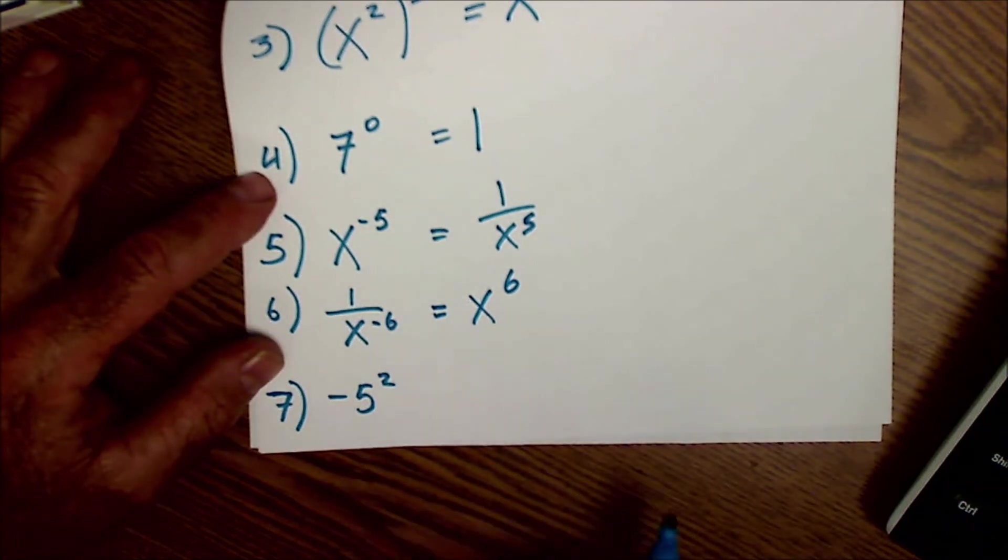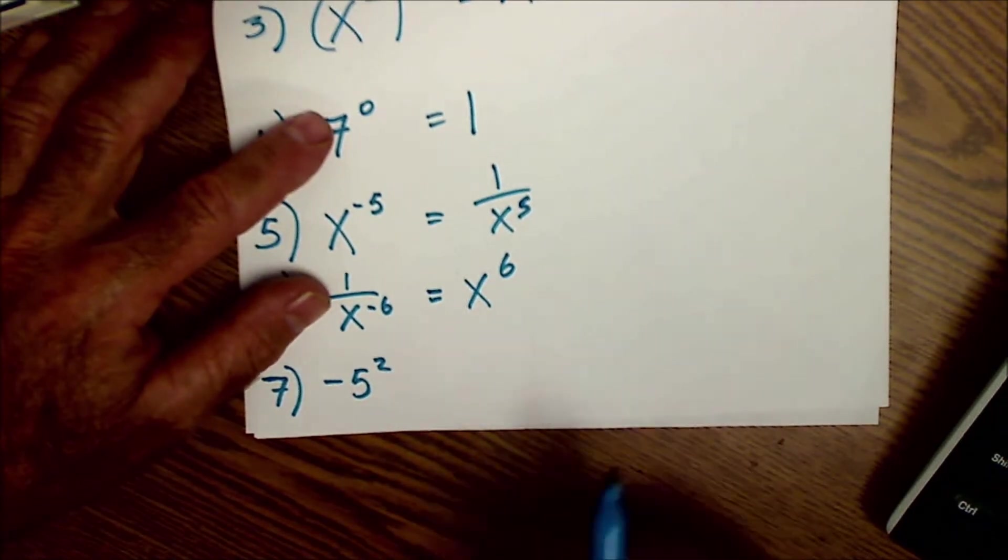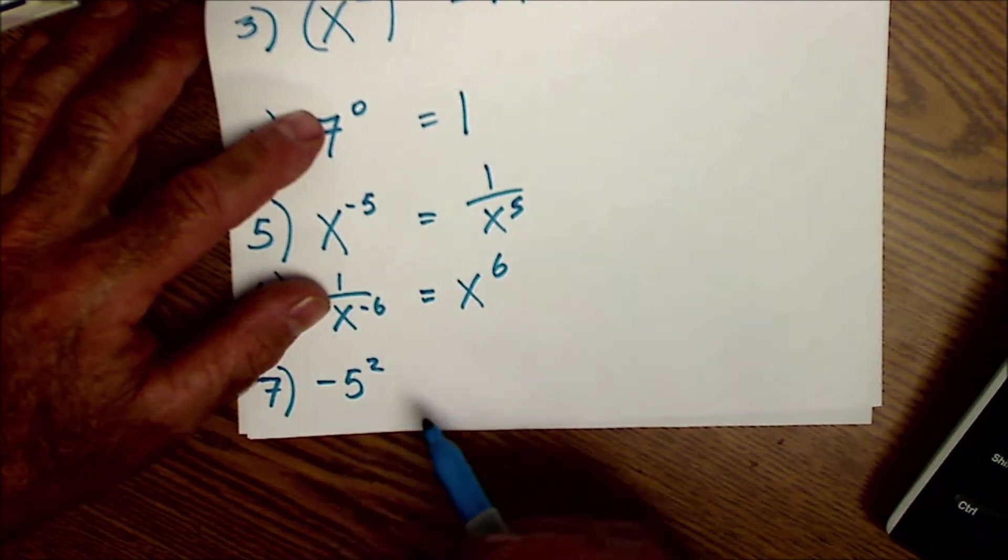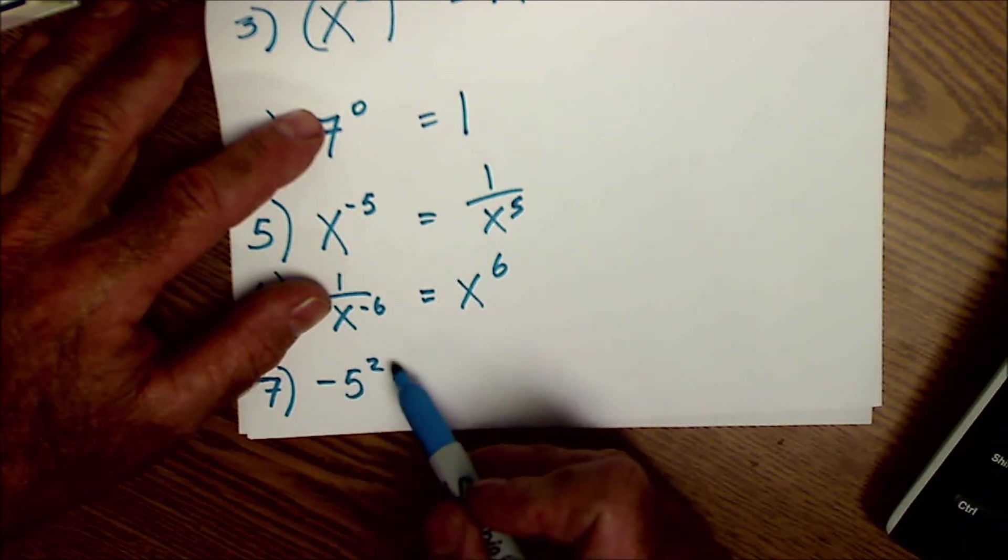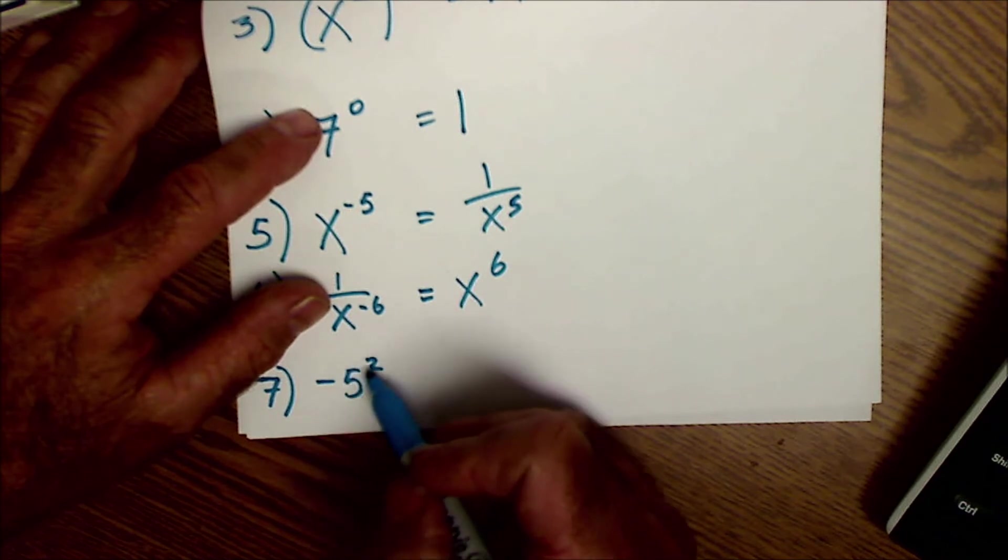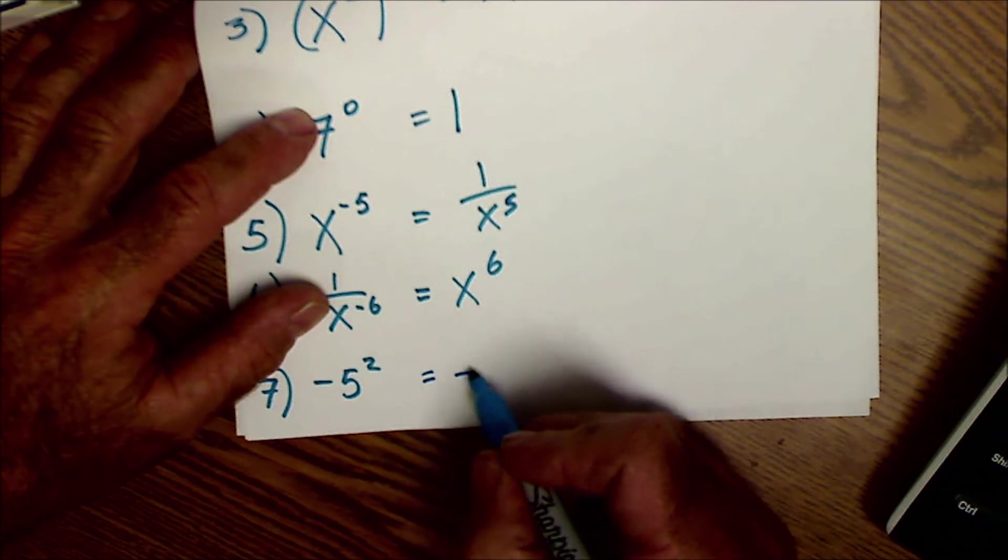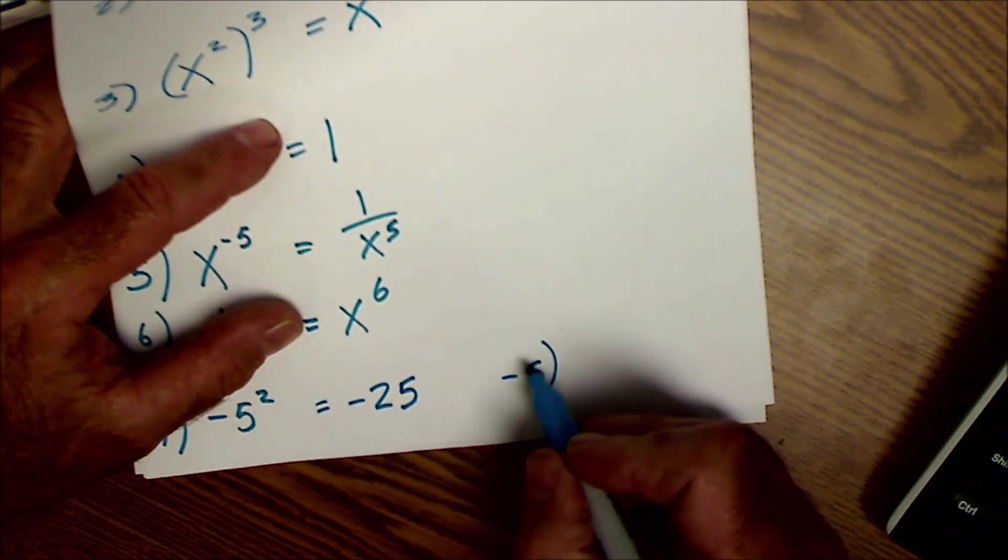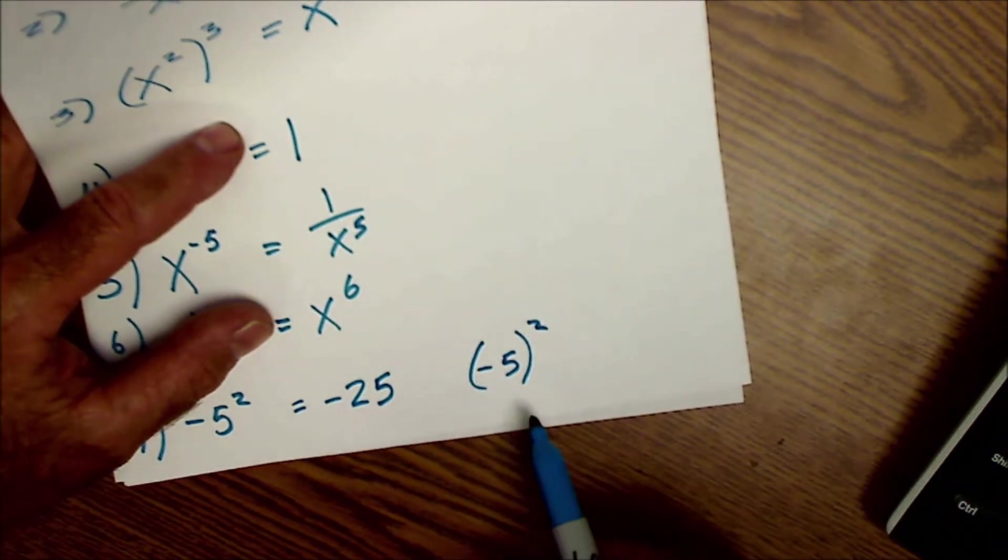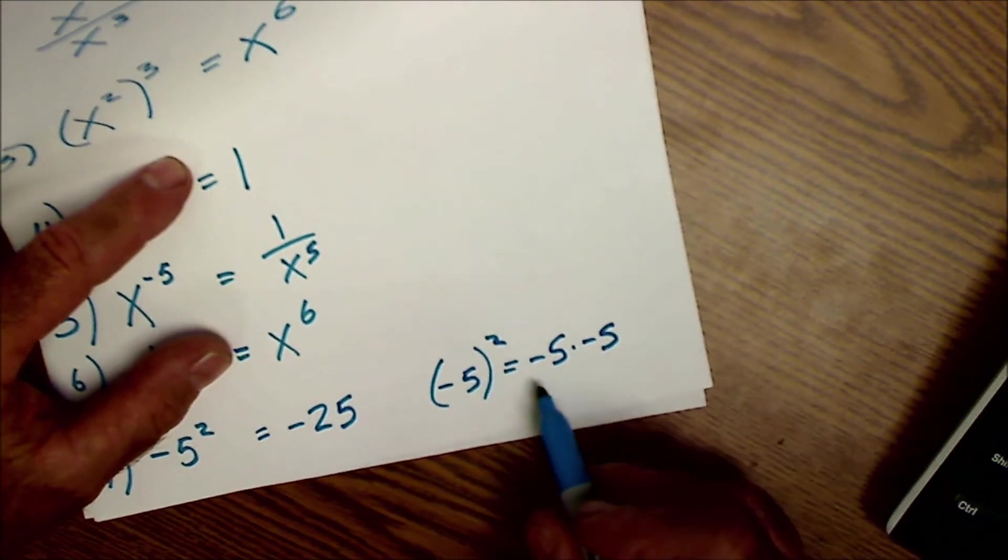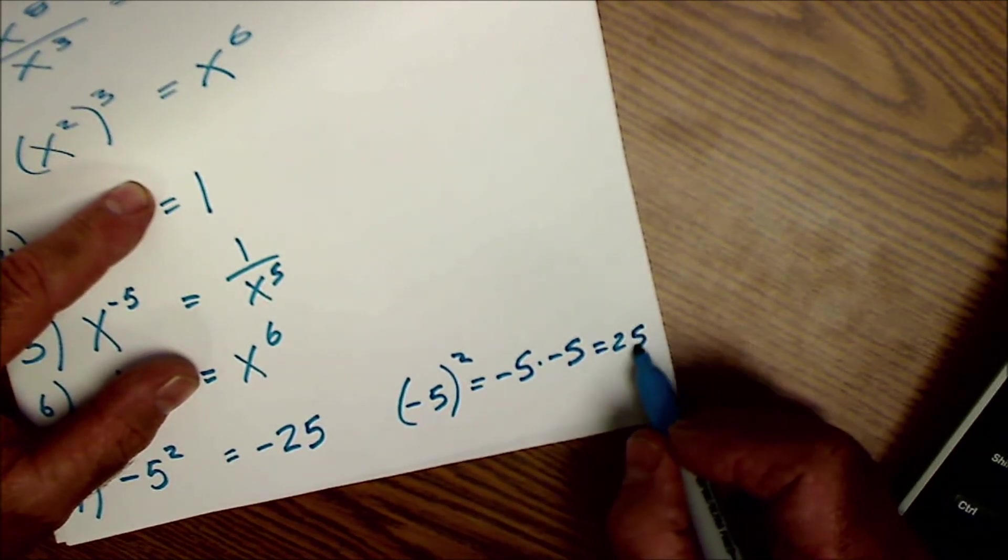Do this one before I do it. It's a little bit misleading. This isn't as much of an exponent problem as it is order of operations. So remember, you do exponents before you do multiplication. So this is really negative 5 to the power of 2. Right, so this thing has to go first, so this is actually equal to negative 25. Versus if say I had negative 5 quantity squared, that is saying negative 5 times itself, negative 5 times negative 5, which is a negative times a negative or positive 25.